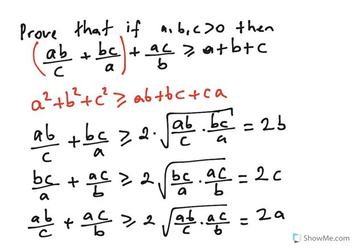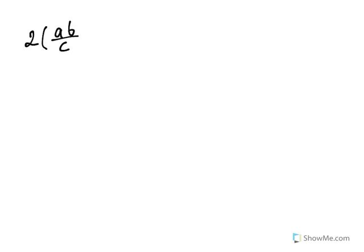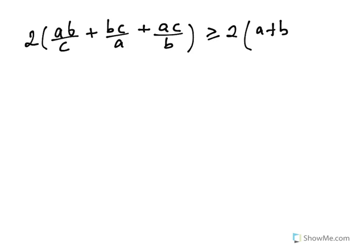Adding these inequalities side by side gives 2(AB/C + BC/A + AC/B) ≥ 2(A+B+C). Dividing both sides by 2 yields the desired result: AB/C + BC/A + AC/B ≥ A+B+C.